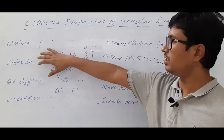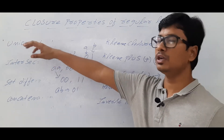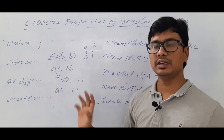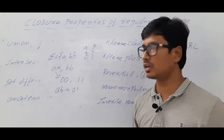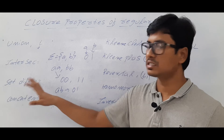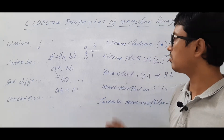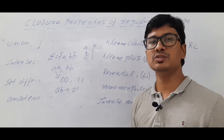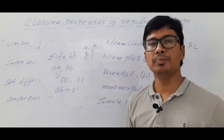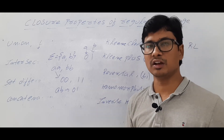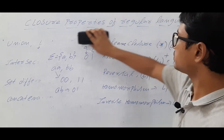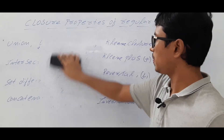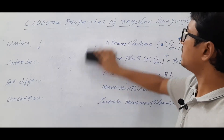For everything — union between two regular languages is regular, intersection between two regular languages is regular, set difference is also regular, concatenation is regular — everything generates a regular language. So it is easy to remember the closure properties of a regular language.